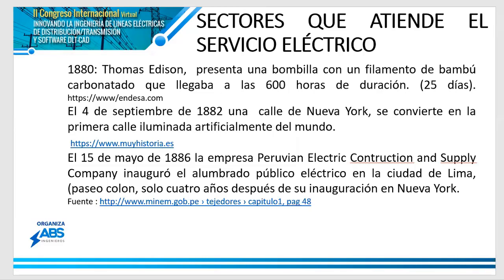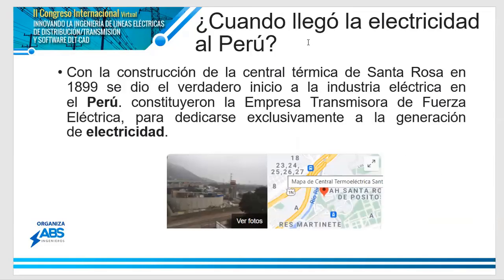Regresando al Perú, el 15 de mayo de 1886 la empresa Peruvian Electric Construction inauguró en la ciudad de Lima, exactamente en el Paseo Colón, la primera iluminación eléctrica, solo cuatro años después de su inauguración en Nueva York. Estamos hablando de 135 años al 2021. El año 1899 se construye la primera central térmica de Santa Rosa, en Lima, cerca al río Rímac, primer indicio de la industria eléctrica en el Perú.